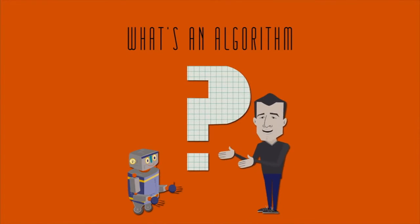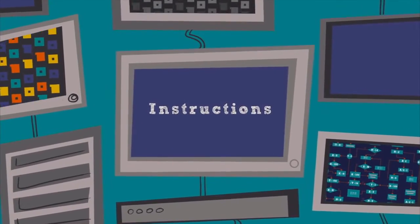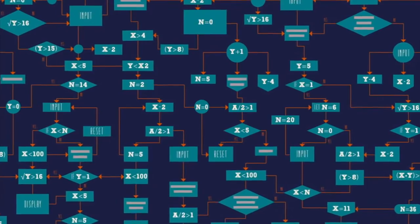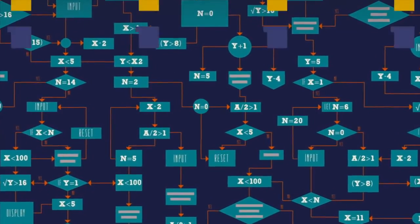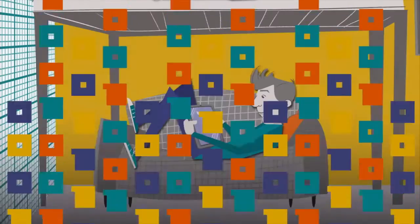What's an algorithm? In computer science, an algorithm is a set of instructions for solving some problem, step by step. Typically, algorithms are executed by computers, but we humans have algorithms as well.